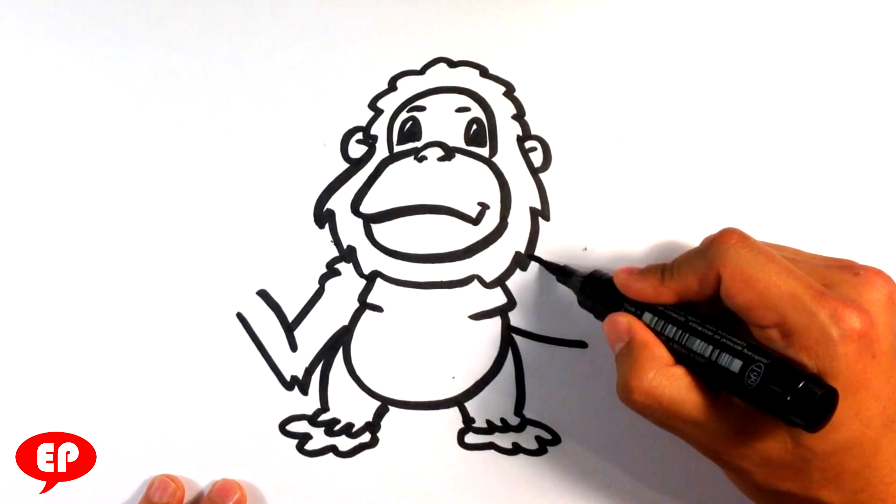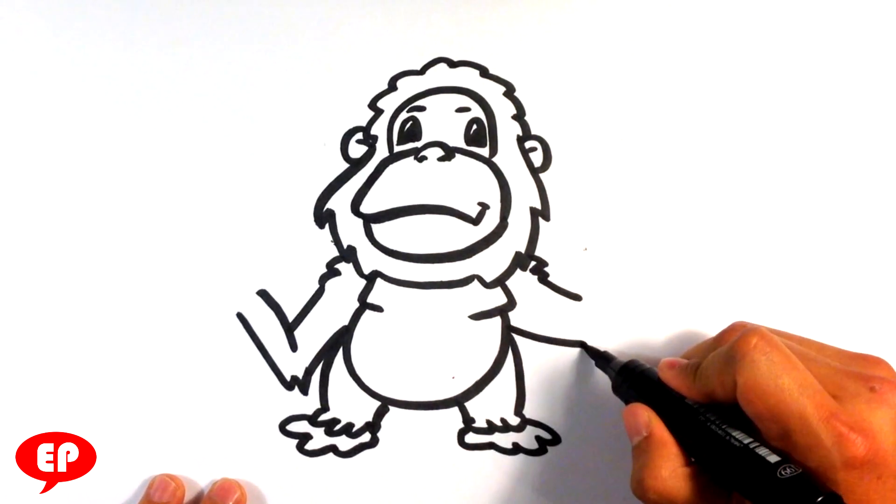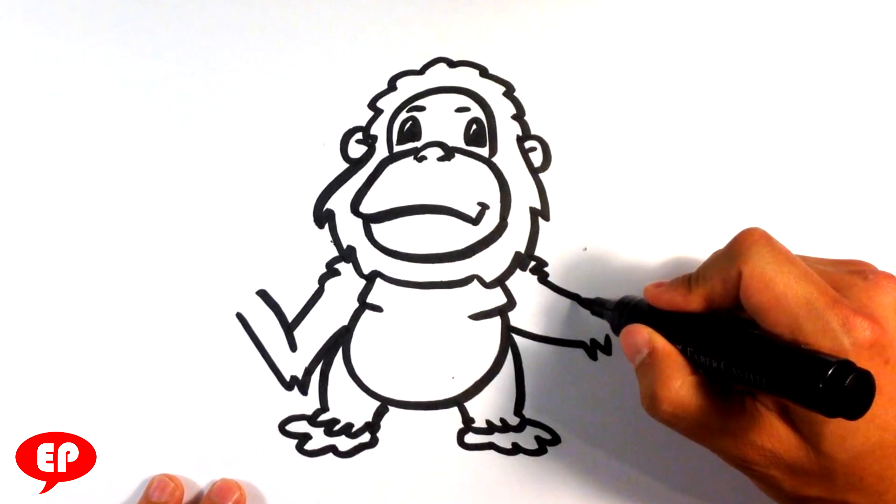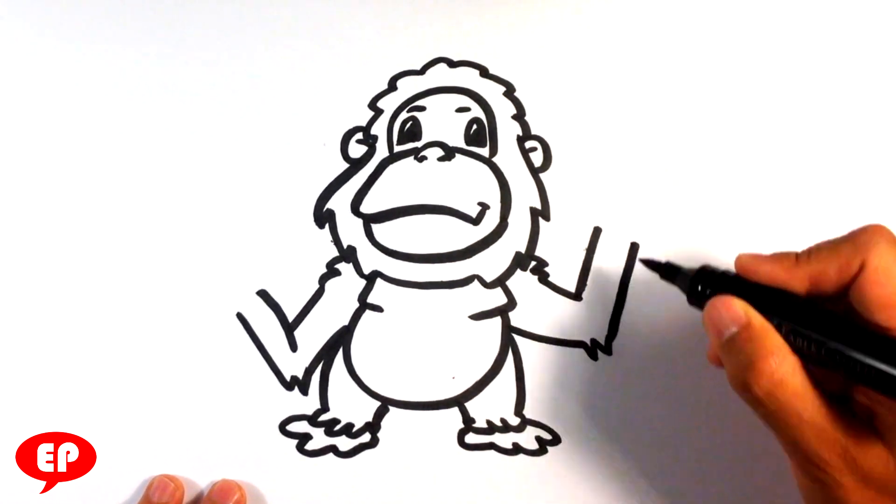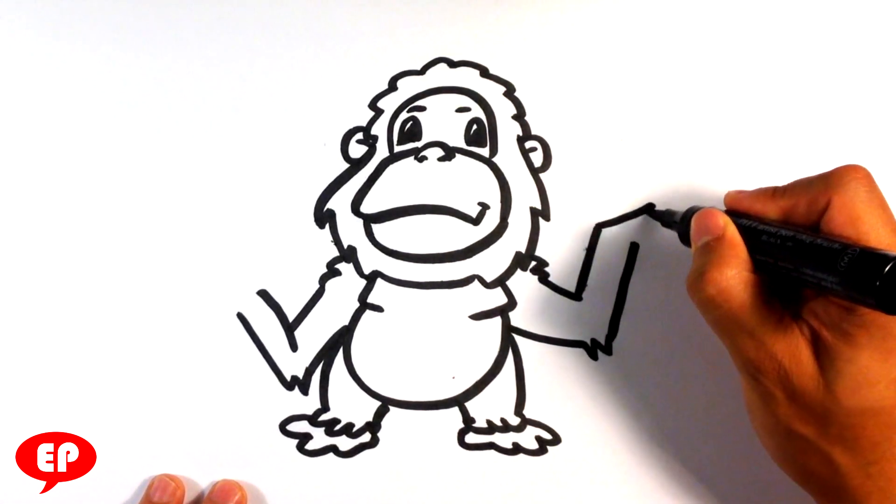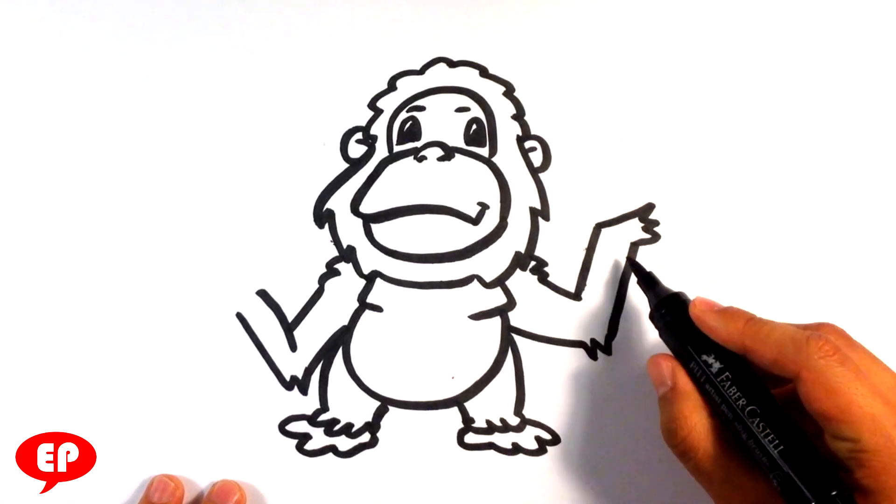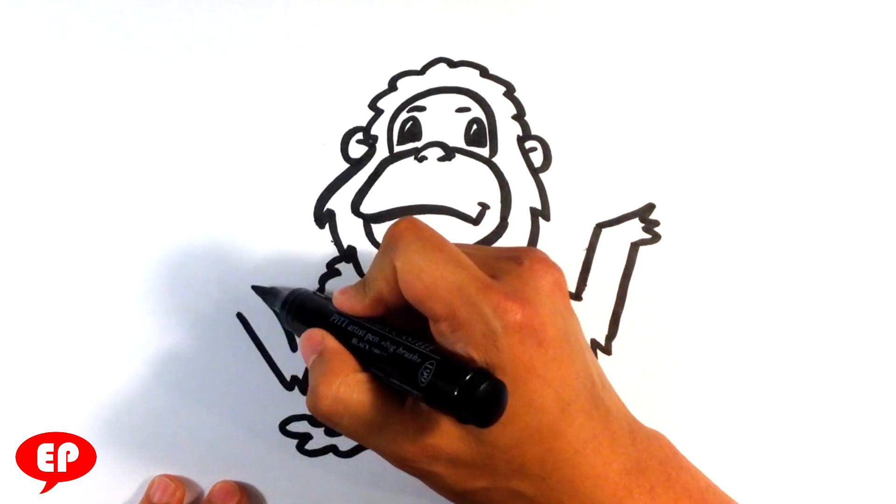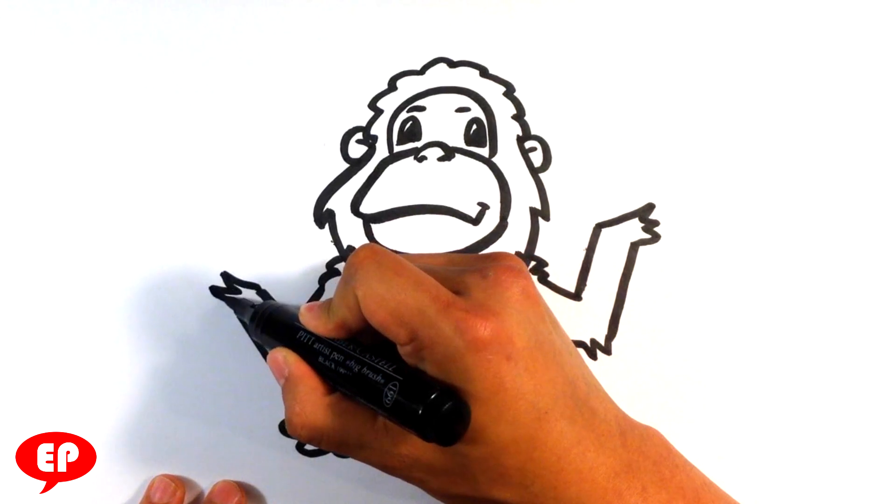Other arm on this side, shoulder furry, straight. Furry elbow. Straight lines for the actual forearm. Putting that shape for the top of the hand, the fur on top of the hand. Same thing on this side as well.